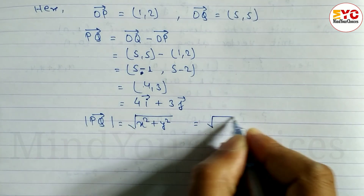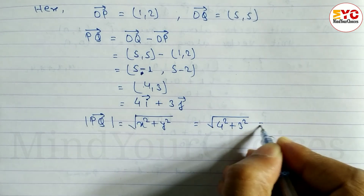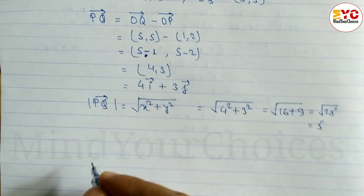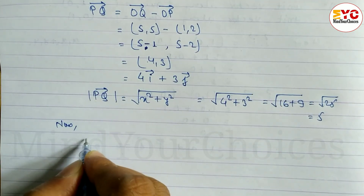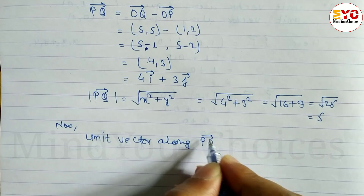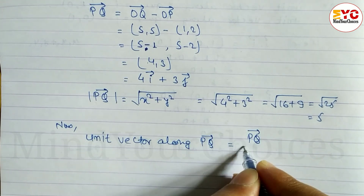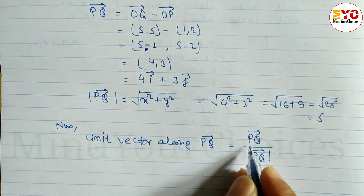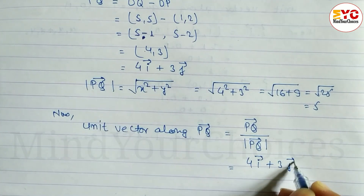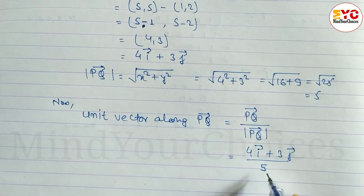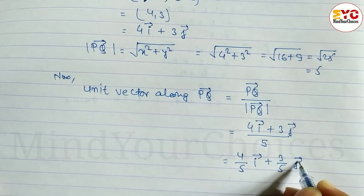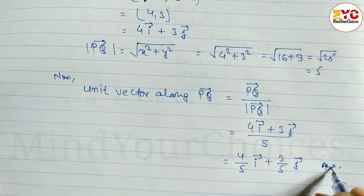X is 4 and Y is 3. So magnitude of PQ equals root under 4 squared plus 3 squared, which is root under 16 plus 9, equals root under 25, equals 5. The unit vector along PQ equals vector PQ divided by magnitude of PQ, which is (4i + 3j) divided by 5. Separating: 4/5 i plus 3/5 j is the answer.